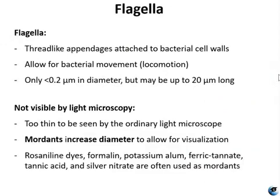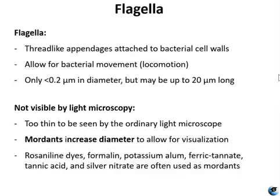Flagella are tail-like extracellular structures used for locomotion. They are very thin — less than 0.2 micrometers in diameter — and typically cannot be seen under a light microscope without a specialized staining technique to thicken them. Generally, a mordant is applied first, sometimes containing tannic acid or potassium alum, a heavy metal. The mordant coats the flagella, and the specimen is then stained with pararosaniline or a basic fuchsin dye. The use of tannic acids and heavy metals makes this technique uniquely hazardous, and it should only be performed under a laminar flow hood.